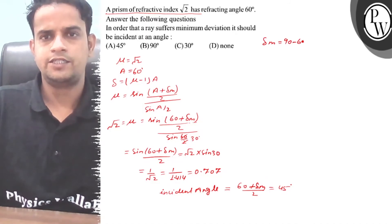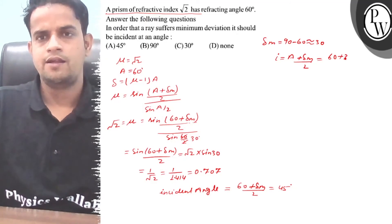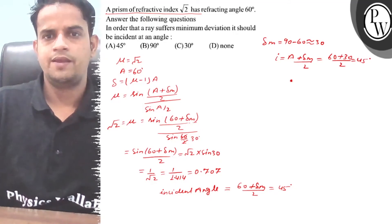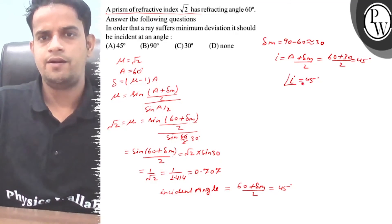i equals (A plus δm) divided by 2, equals (60 plus 30) divided by 2, equals 45. So the incident angle is 45 degrees.